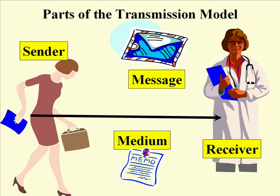Now, lastly, the researchers came up with the idea of noise or static. This is anything which interferes with the successful transmission of the message. When you're talking about a phone call, this can be static on the line or the inability to connect. This is the basic transmission model. If you move on to part two, we'll talk about how this is developed more in the modern view of communication.